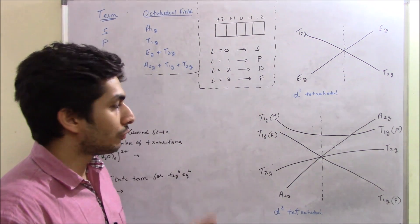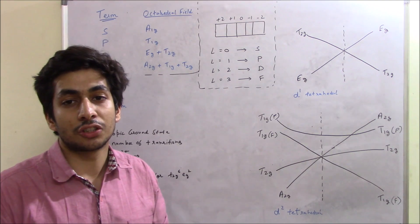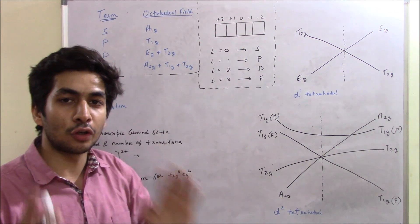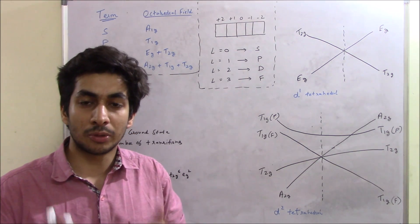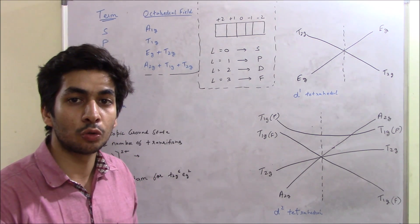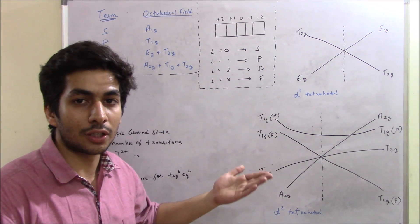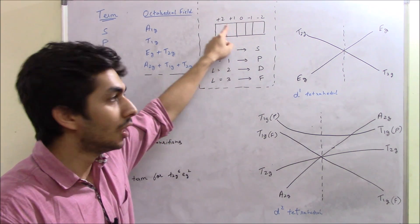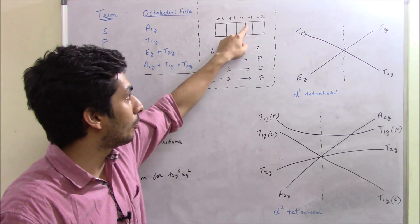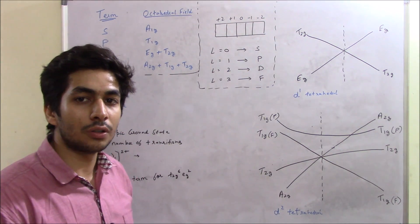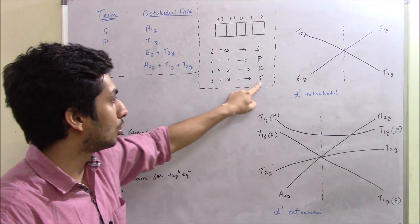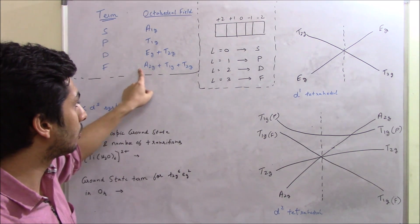How do we find the term? Say we have a D2 electronic configuration. Following Hund's rule, the first electron goes in +2 and the second in +1, giving a total ML of +3, so L = 3 which is the F term. Note: Orgel diagrams are only applicable to high spin complexes — never use them for low spin. For D1, the first electron goes in +2, giving L = 2, which is the D term.